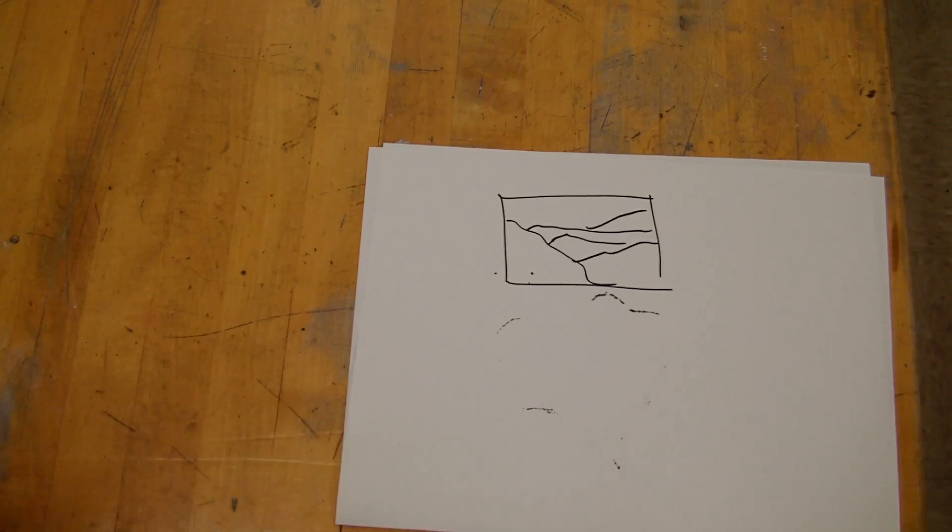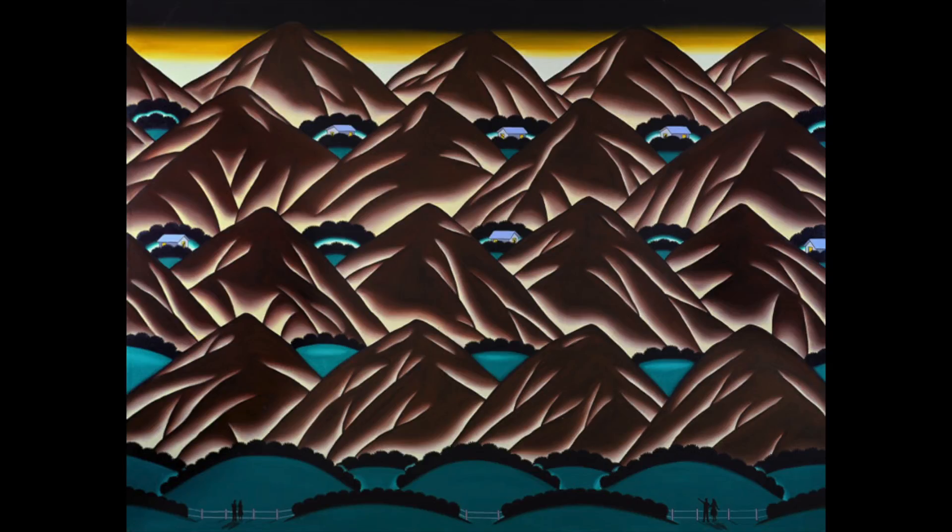Now I'm going to show you an example of a Roger Brown painting right here, that this one is more symmetrical. As you can see, the left and the right side are pretty equal. Do they have to be perfectly equal? Absolutely not.